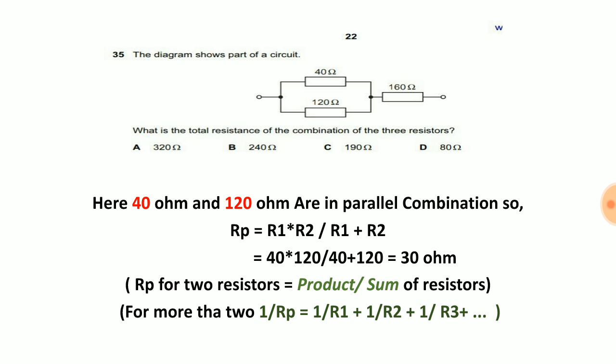Here 40 and 120 are in parallel combination, so our formula to calculate the parallel combination is product divided by sum of resistors in case of two resistors only. If there are only two resistors, we have to multiply them and we have to add them, and when we divide product by sum we will get the required answer.